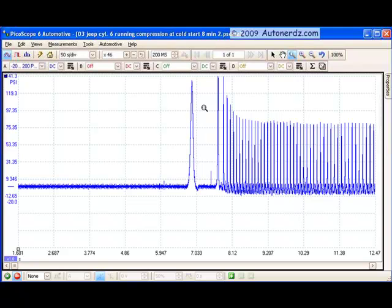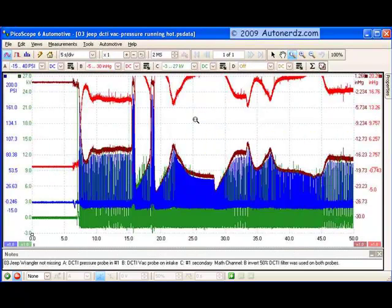Just to illustrate that, let me bring up a capture that shows it very clearly. Here is an example of several throttle snaps taking place, which of course are going to change cylinder pressures and intake pressures. We have the blue channel as a running compression.